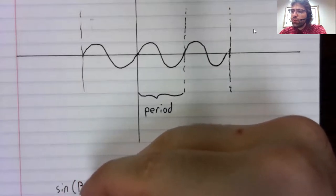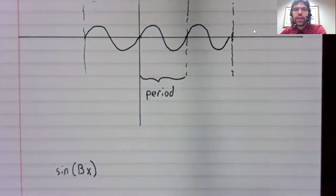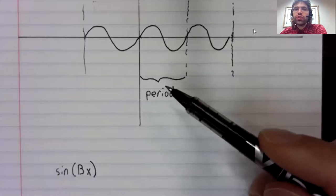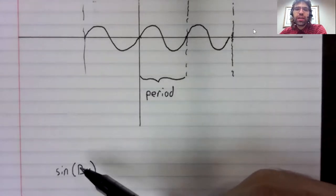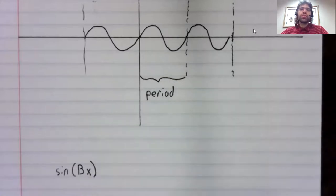And we'll now look at the sine of b times x. And what we're going to find is that it's going to change the period. That is to say, this capital B will control the period of the sine function.